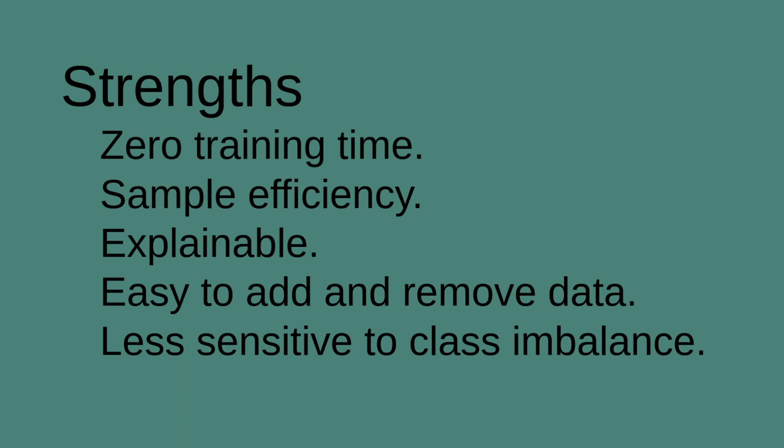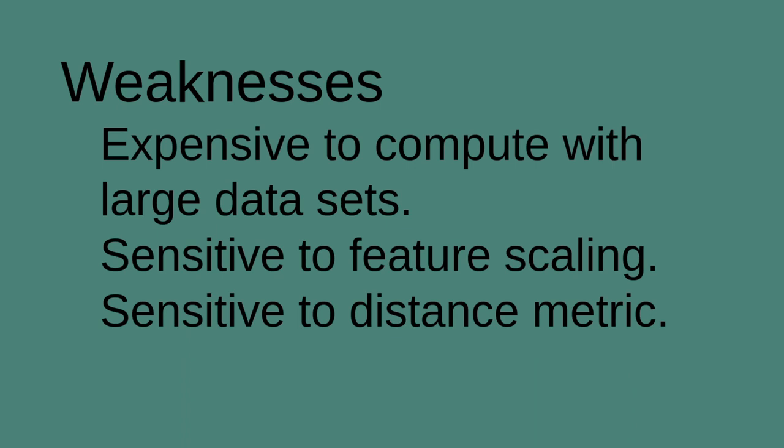Now it's not without weaknesses. No algorithm is perfect. Everything has trade-offs. So k-nearest neighbors, it's expensive to compute. If you have a lot of data points and you have to find the five closest, it means you have to figure out how close all of them are so you can find the five that are the closest. And calculating that distance can get very expensive if you have billions of data points. Also, as we've called out, it's sensitive to feature scaling and it's sensitive to your choice of distance metric. So you have to get those right or you can get really nonsensical answers.